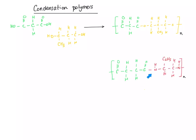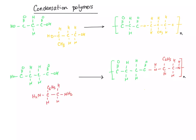This polymer contains an amide group so it's a polyamide, and to get a polyamide we start with a dicarboxylic acid and a diamine. Again, you can imagine putting an OH there and an OH there, then adding a hydrogen onto that nitrogen so it becomes an NH2, and a hydrogen onto that nitrogen so that becomes an NH2.